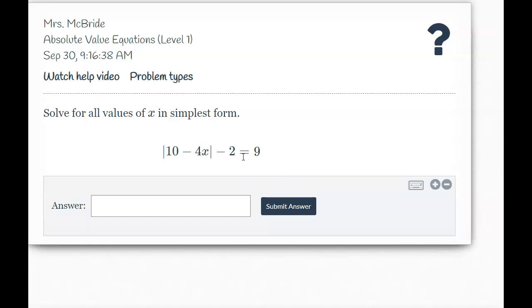So the first step would be to add that 2 to the other side. So you would add 2 to both sides, so then you'd get the absolute value of 10 minus 4x equals 11. Then you split your problem. So you have 10 minus 4x equals 11, and you get 10 minus 4x equals negative 11.